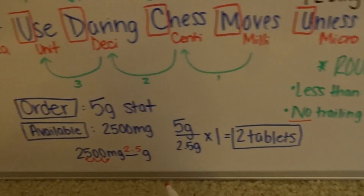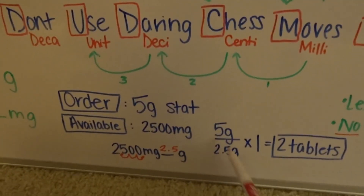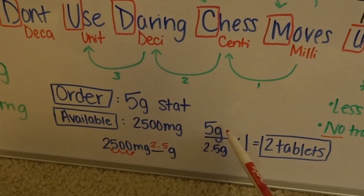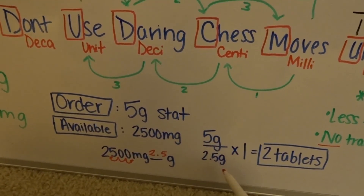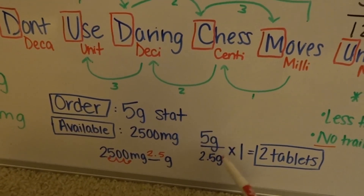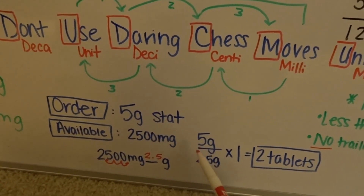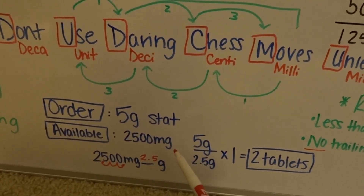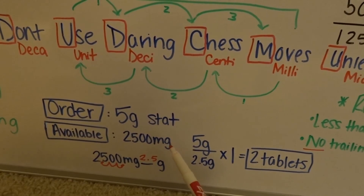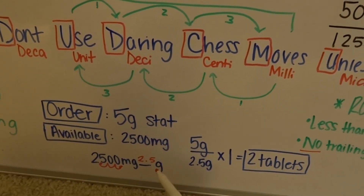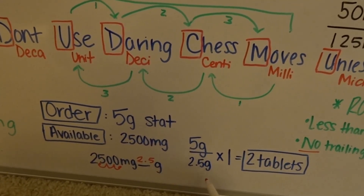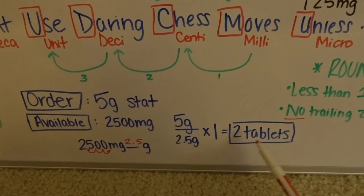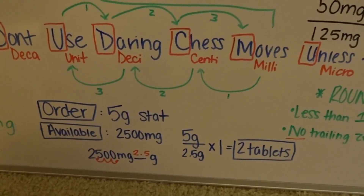Now that we know that, we can plug it in — because you have to have the same units in your equation. You can't have milligrams on top and grams on the bottom; it has to be the same unit. So our order is 5 grams, available is 2,500 milligrams which equals 2.5 grams, times 1 equals 2 tablets. So you're going to be giving 2 tablets.